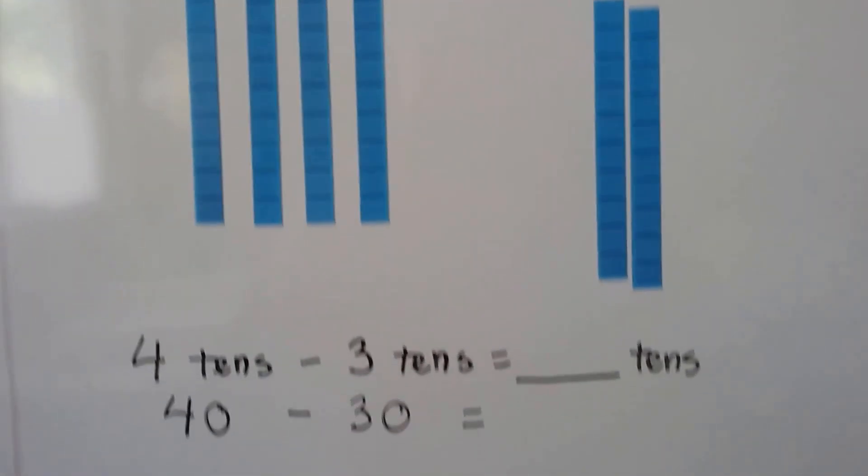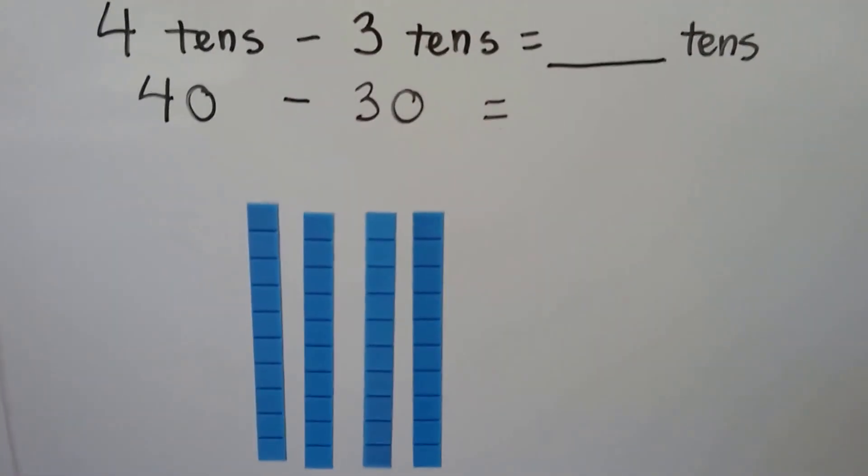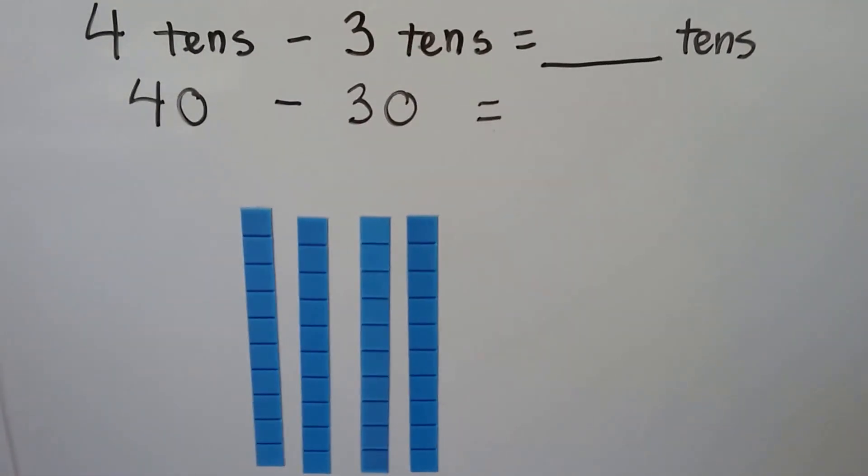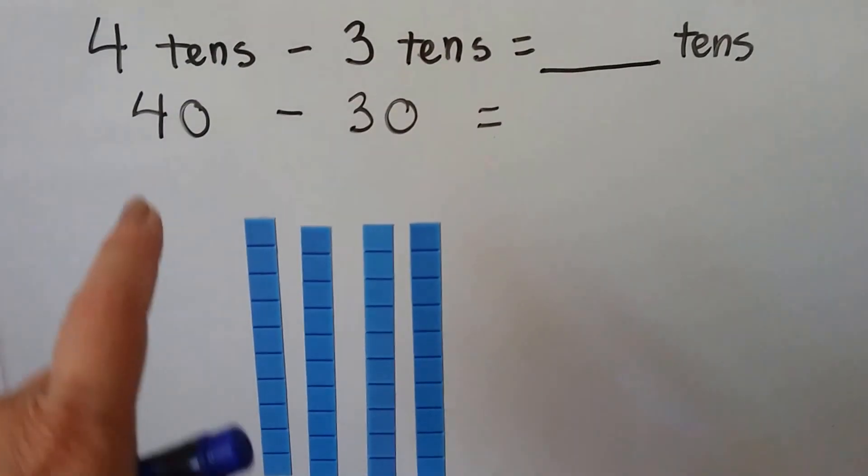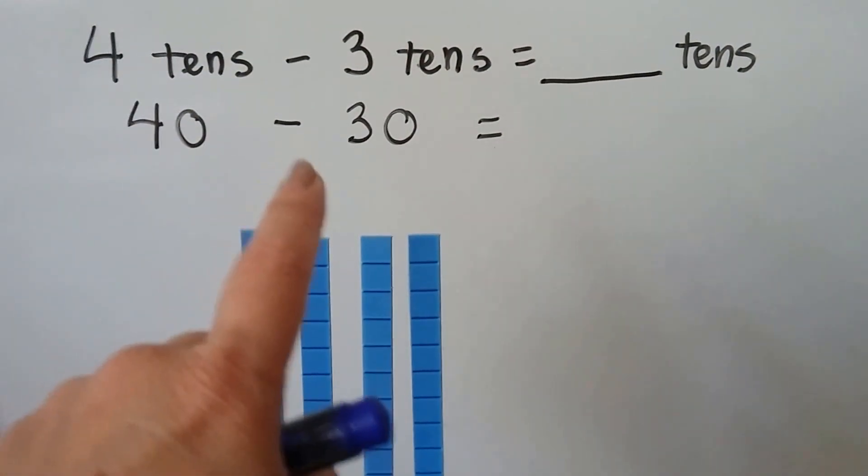Let's try that again. We've got four tens minus three tens. We have four tens here. That's the same thing as forty minus thirty.